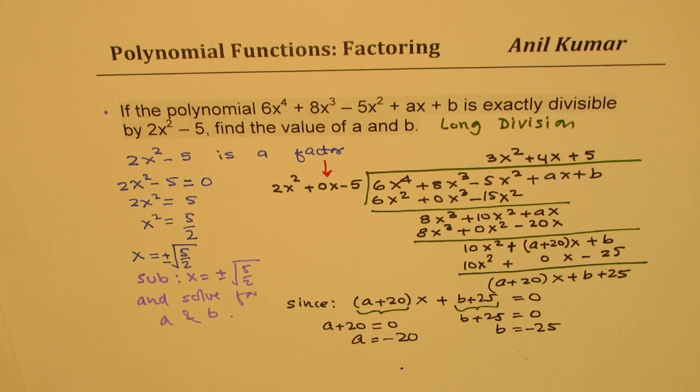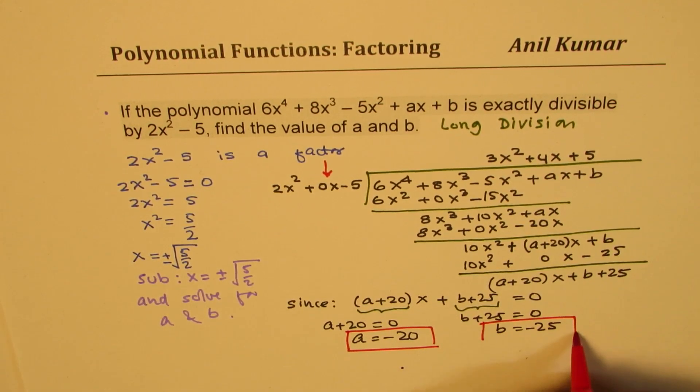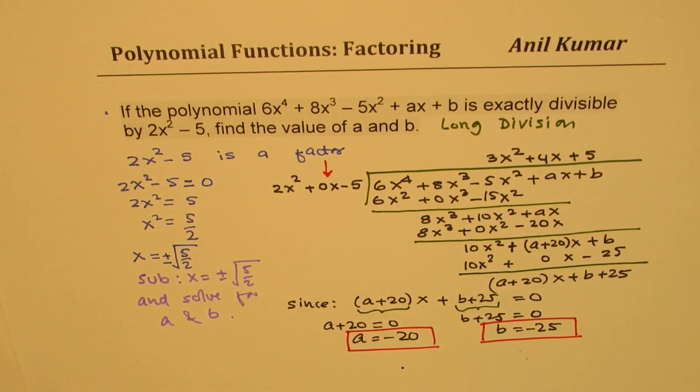That is how you are going to solve this particular equation. We got two answers. Both values of a and b are negative in our case. So a is minus 20, and b is equal to minus 25.